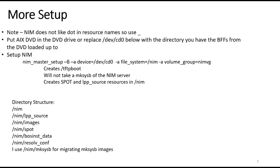The first step is to set up NIM. You would do 'nim_master_setup -B' and point your device at CD zero, which is the DVD with your AIX BFFs on it. Or if you load it all into /software, I usually have an AIX72 base directory there, having used 'smitty bffcreate' to copy everything from the CD. I typically create my /NIM file system and volume group ahead of time, and also /tftpboot. When you run it, it will create /tftpboot, a spot, and an LPP source in /NIM — the default ones, which you'll probably never use again.